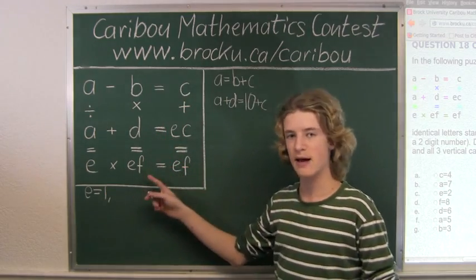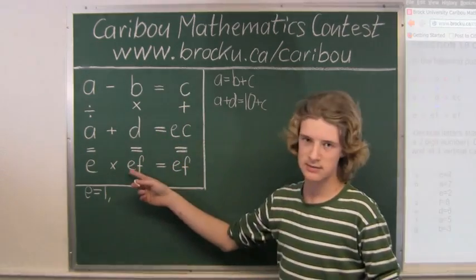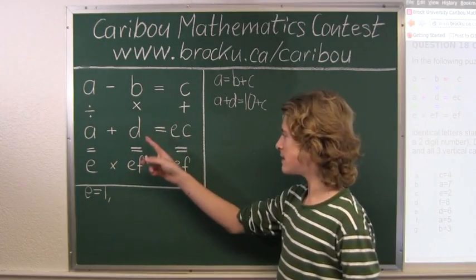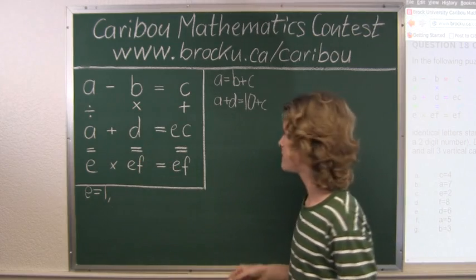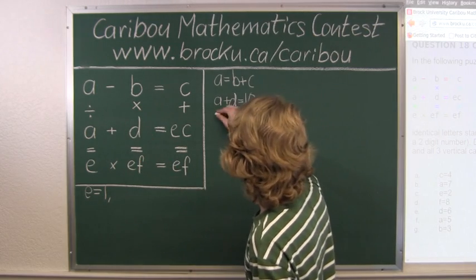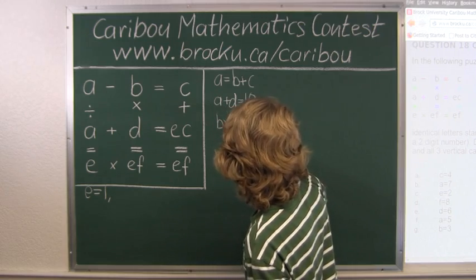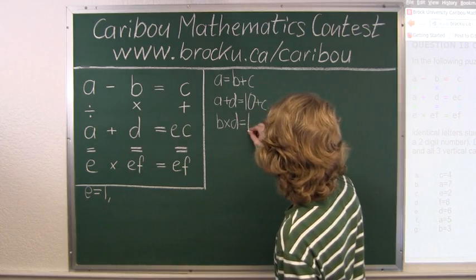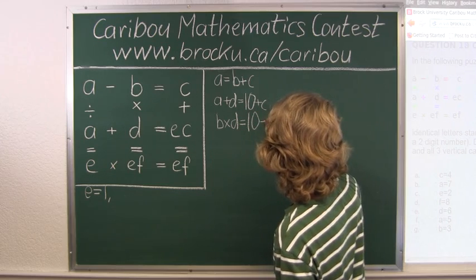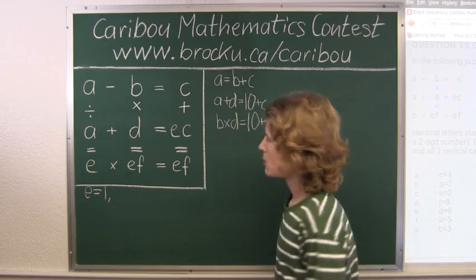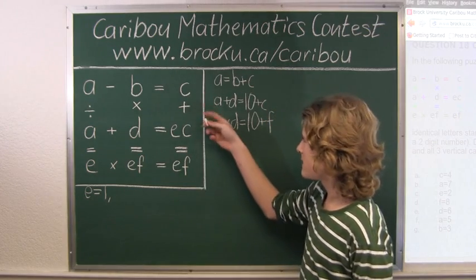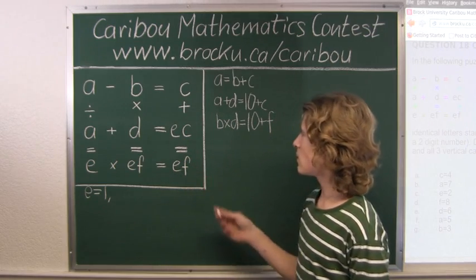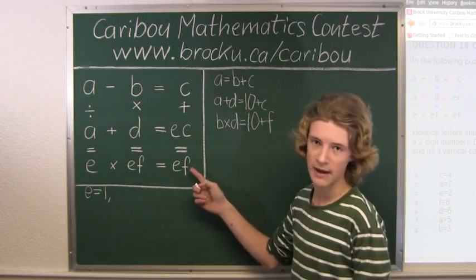B times D equals EF. So again, E is 1, which is in the tens column. So we can write this as B times D equals 10 plus F. And the last column we have is C plus EC equals EF, so we know that C plus C equals F.